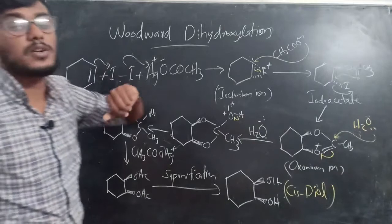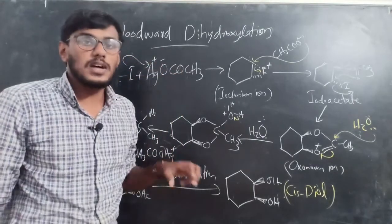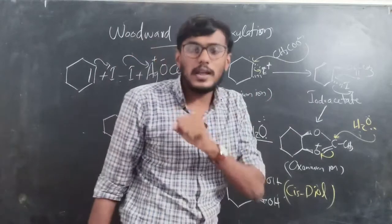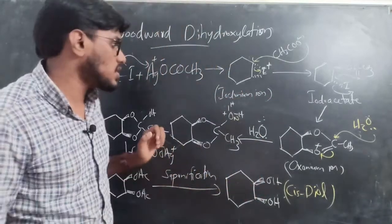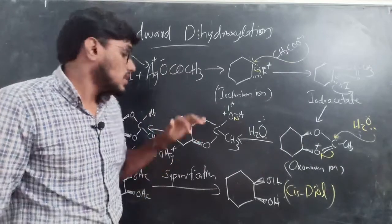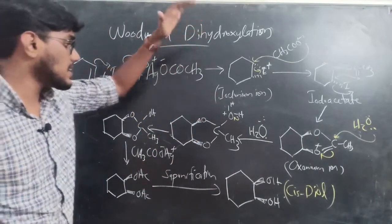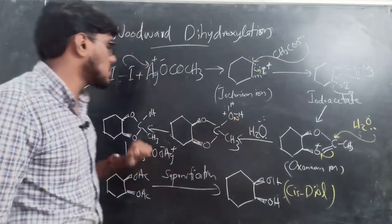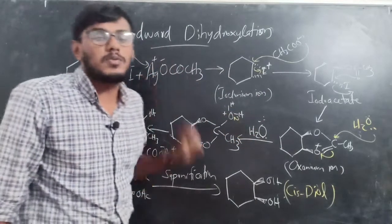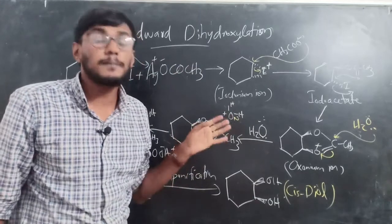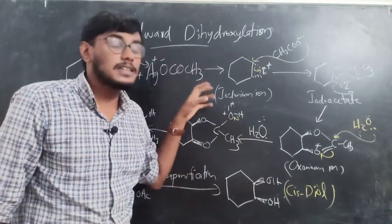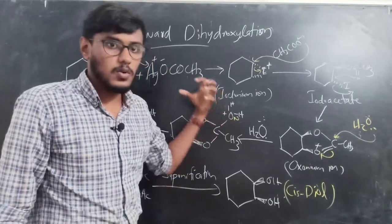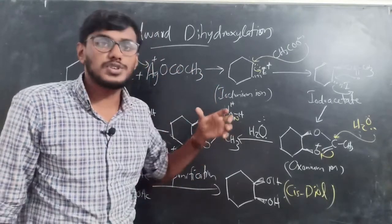The main difference between the two reactions: Woodward dihydroxylation takes place in hydrous conditions — in the presence of water — giving cis-diols. Prevost dihydroxylation takes place in anhydrous conditions — in the absence of water — giving trans-diols. Next we are going to check some examples of these Woodward and Prevost dihydroxylation reactions.